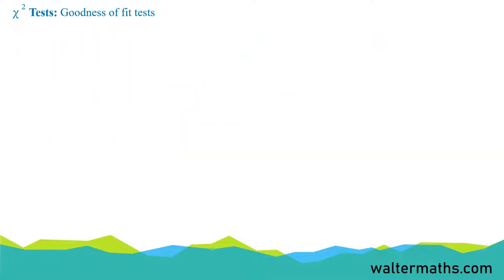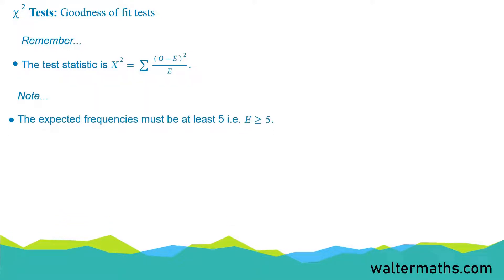As we are getting into carrying out a goodness of fit test, you need to remember that the test statistic X-squared is found by the sum of (O minus E) squared over E. You also need to note the rule that expected frequencies must be at least 5, so E must be greater than or equal to 5. One more thing: chi-squared tests are always carried out in the upper tail.